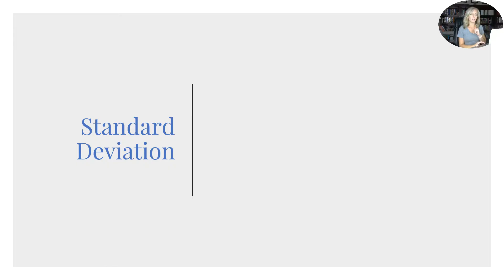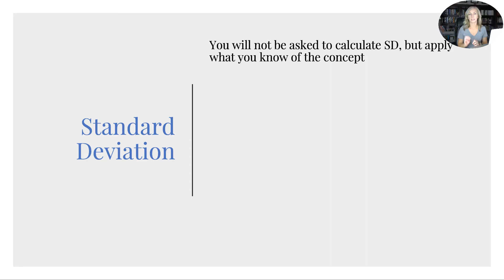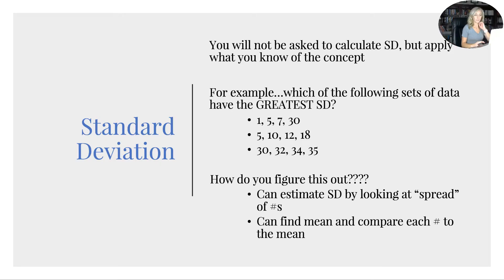So let's talk a little more specific about that standard deviation. Here's the thing. You will not, at least in this course, AP Psychology, you will not be asked to calculate standard deviation. But you do need to apply what you know of the concept. You have to understand it conceptually. For example, which of the following sets of data has the greatest standard deviation? So look at each of those bullet points I have there for you. So hopefully you look in between each of the numbers, right? This one's 1 to 30, right? So there's a difference of 4, a difference of 3, and then a difference of like a lot there. Isn't that like 23 or something? And this one is a difference of 5, 2, and of 5. This one's a difference of 2, 2, and 1. So that last one has the smallest difference.